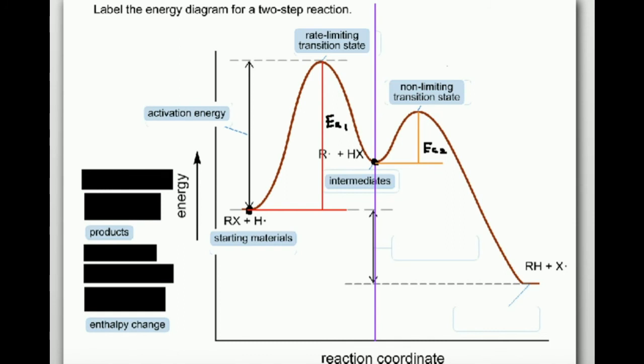I can go ahead and label the products. The products are just what are over here, Rh plus x radical. I go from starting materials or reactants or substrates to products.